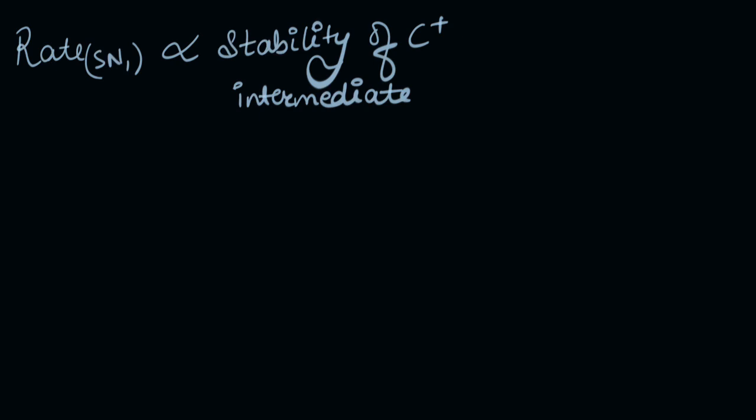During this substitution, there is an intermediate formed, and the more stable it is, the faster the reaction is. So before going further, I think it is important that we recapitulate how exactly a carbocation is stabilized.